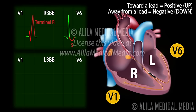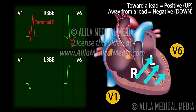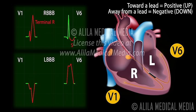In left bundle branch block, septal depolarization is reversed from right to left, giving a negative wave in V1. The right ventricle activates first, with signals moving to the right, generating a small upward deflection. Depolarization then spreads to the larger left ventricle, resulting in a large downward deflection. Lead V6 sees the opposite, producing a wide, characteristic bunny ears QRS complex with two R waves.